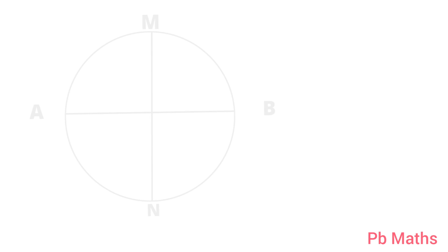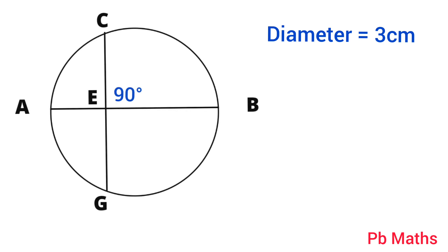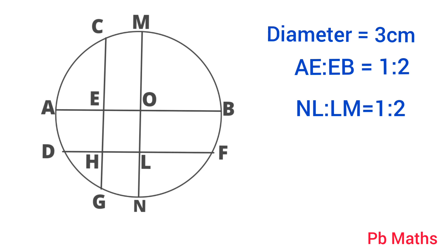In the figure, the diameter of the circle is 3 cm. AB and MN are the two diameters such that MN is perpendicular to AB. In addition, CG is perpendicular to AB such that AE to EB equals 1 to 2, and DF is perpendicular to MN such that NL to LM equals 1 to 2. Then, what is the length of DH in cm?